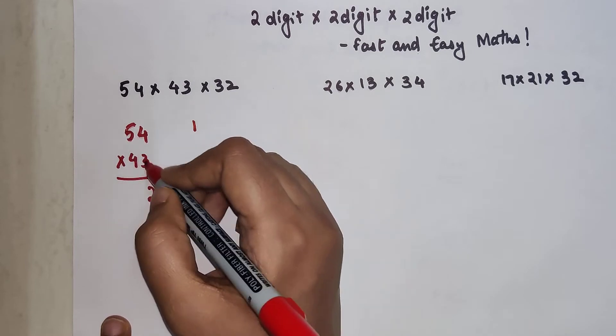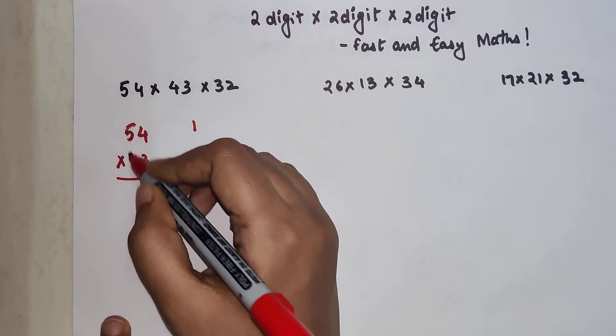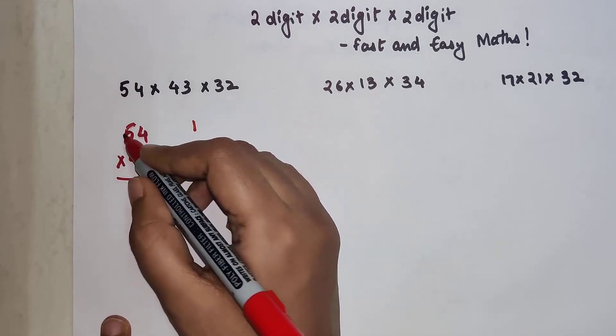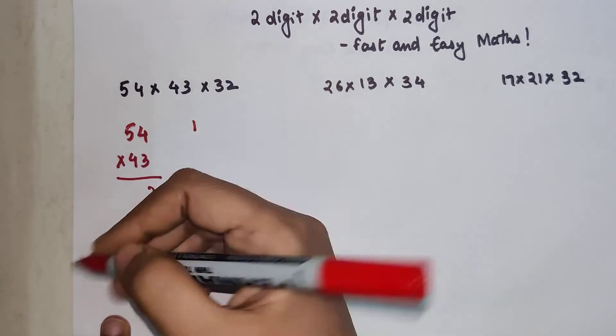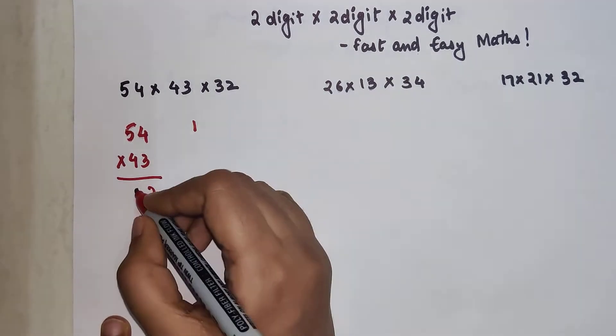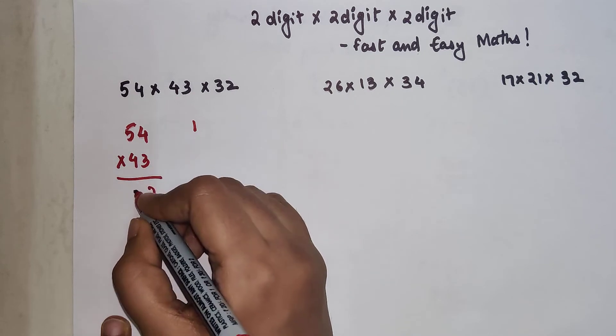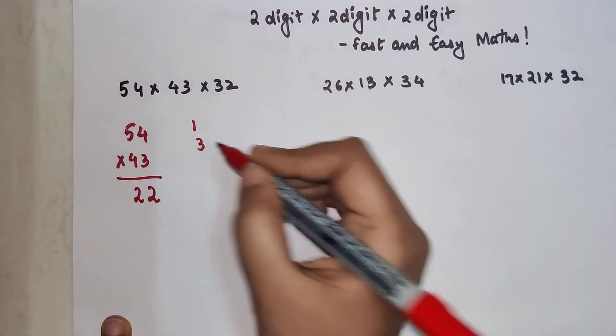Then we are going to multiply cross. So 3 into 5 is 15, 4 into 4 is 16. So 15 plus 16 is going to get you 31 plus this 1. So we are going to get 32 and we are left with 3.